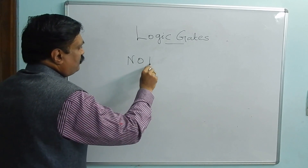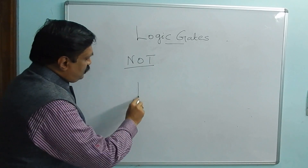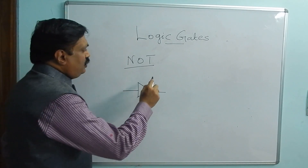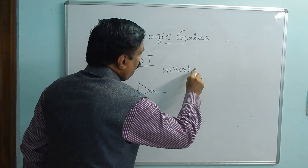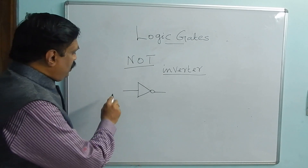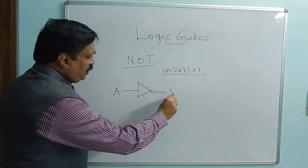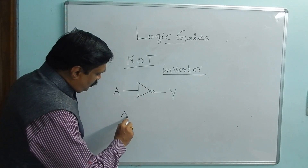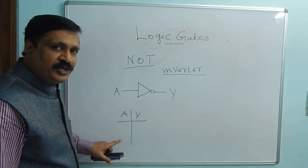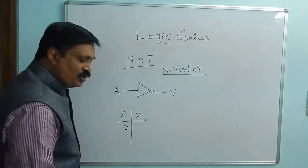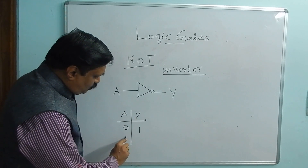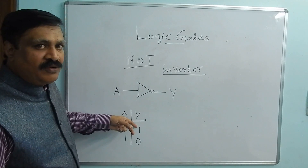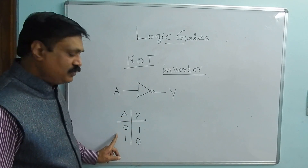The next gate is the NOT gate. This is the circuit symbol for the NOT gate. It is also called an inverter gate. Here there is one input A and one output Y. If the input is 0, the output is 1. If the input is 1, the output is 0. That means it is just an inversion — the output is the complement of the input.